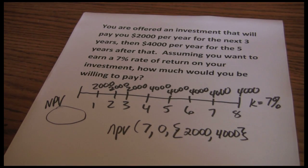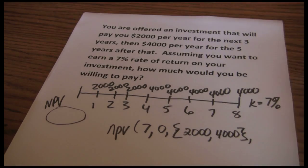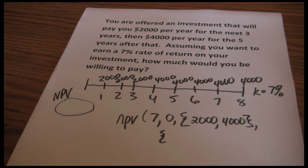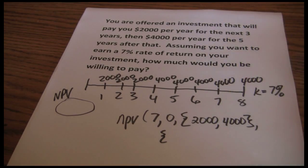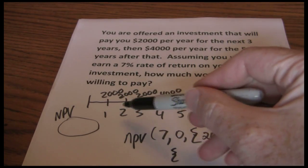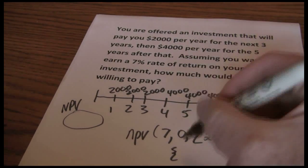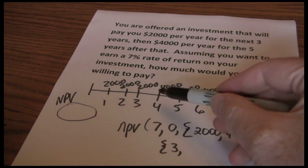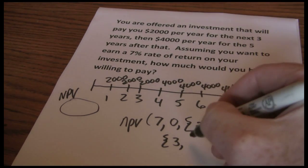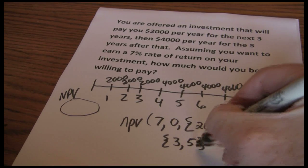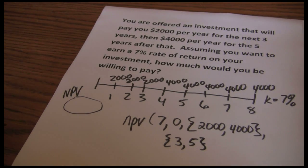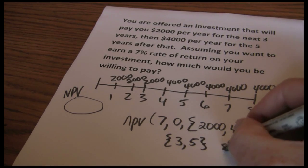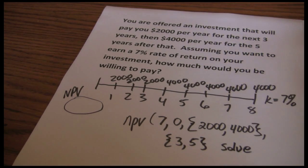We close that out with the squiggly bracket, then a comma. Now we want to put in the frequencies — how many times in a row do we have each cash flow sequence? The $2,000 occurs for three years and then $4,000 for five years, so our frequencies are three and five. Now we've got everything set up and we can solve.